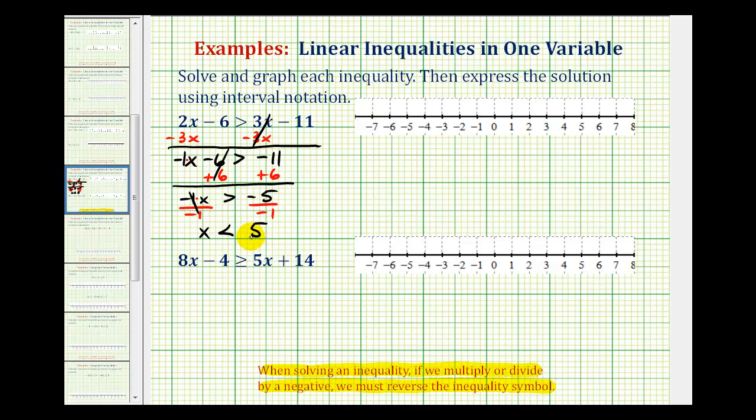So to graph this, since 5 is not in this interval, we'll make an open point on 5. And then for values less than 5, we have an arrow to the left.